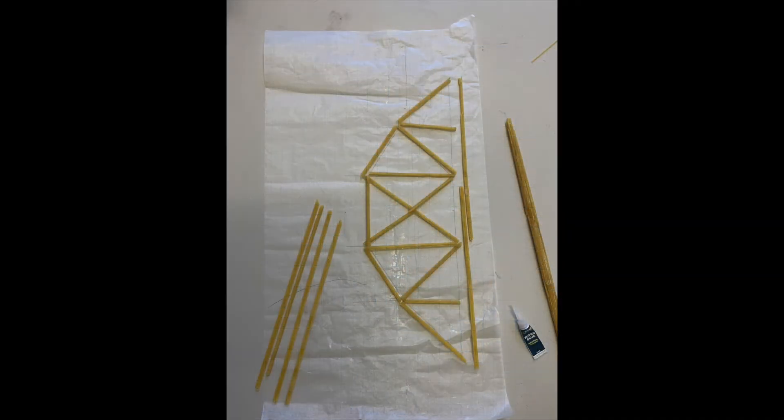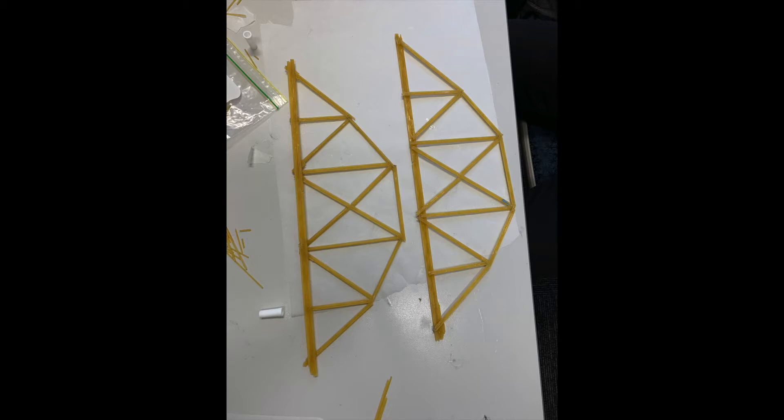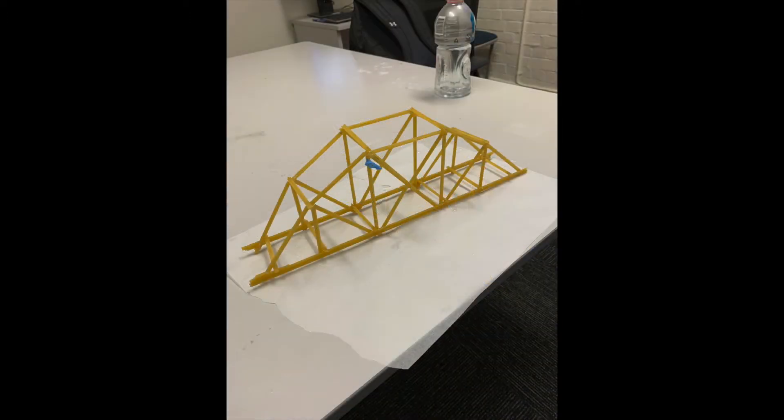Design number one was a basic truss design and was our first testing model. We had a lot of trial and error throughout the three days we met up to construct the bridge. We started by drawing up a template of the bridge on a sheet of baking paper, which was the best surface that the bridge wouldn't stick to. After creating the bottom cords, we then measured all truss members and cut them to size. All members consisted of five pieces of spaghetti, and the dimensions of the bridge were 400 millimeters by 80 millimeters and had an overall weight of 89 grams.